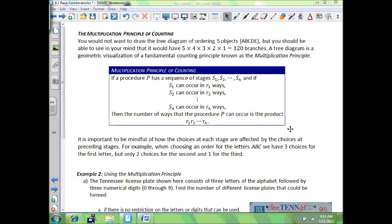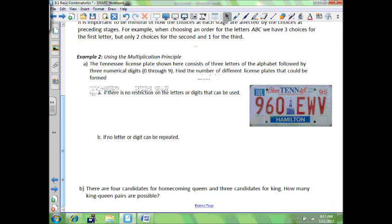You would not want to draw the tree diagram of ordering five objects, but you should be able to see in your mind that it would have five times four times three times two times one, so 120 branches. A tree diagram is the geometric visualization of a fundamental counting principle known as the multiplication principle. The multiplication principle of counting states: if a procedure P has a sequence of stages s1, s2, s3 all the way up to sn, and if s1 can occur in r1 ways, and s2 can occur in r2 ways, and sn can occur in r sub n ways, then the number of ways procedure P can occur is the product r1 times r2 all the way up to rn. It's important to be mindful of how the choices of each stage are affected by the choices of the preceding stages. For example, when choosing an order for the letters A, B, C, we have three choices for the first letter, there are only two choices for the second, and one for the third.